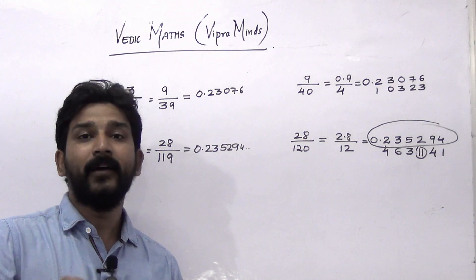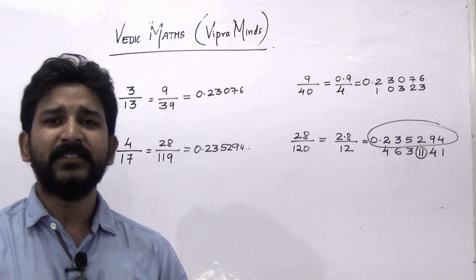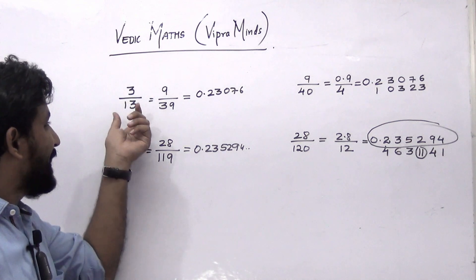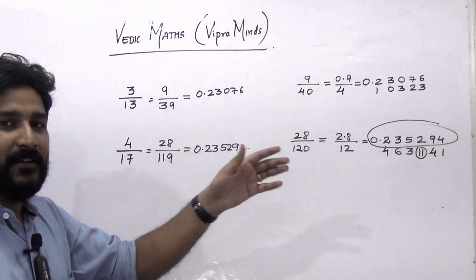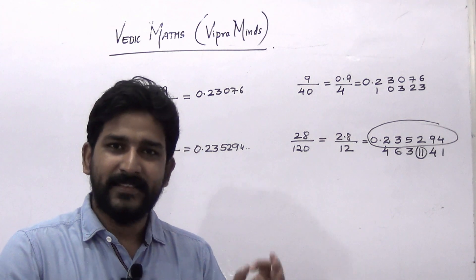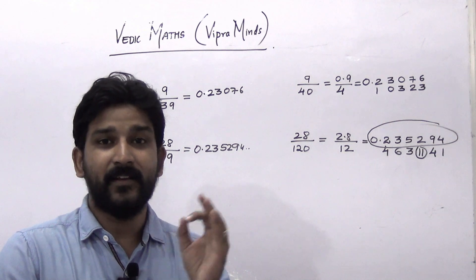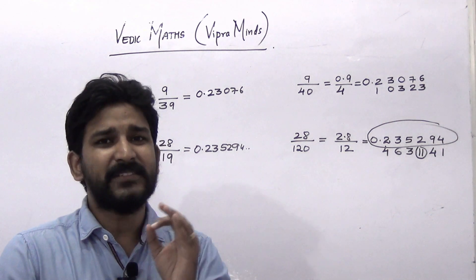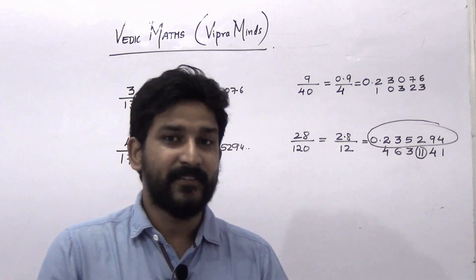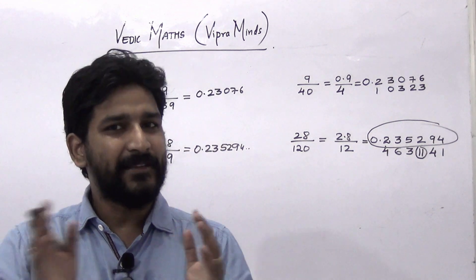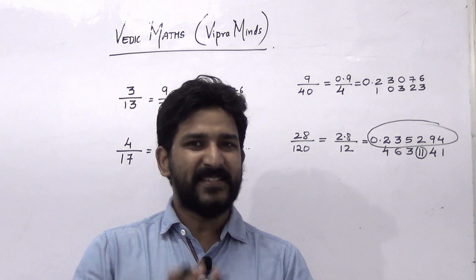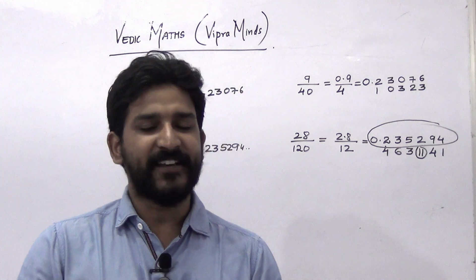Just keep on dividing until you get a recurring value. So this is how we can divide any number by other numbers such that the divisor can be converted to end with 9. Once it ends with 9, follow the same steps seen in the previous video. If you have not seen our previous video on divisors ending with 9, please refer to it first. Hope you have understood — if you have any doubt, write in the comment section. Thank you.